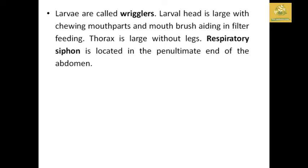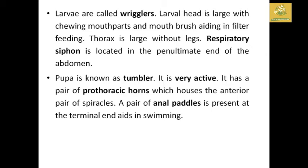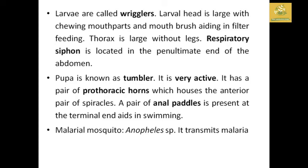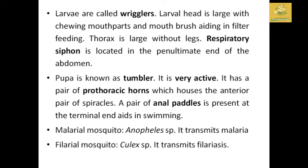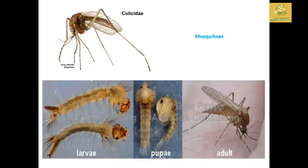The female mosquito lives long and is a blood feeder, also known as a household pest. The larvae are called wrigglers; the larval head is large with chewing mouthparts. The thorax is large without legs. A respiratory siphon is located at the penultimate end of the abdomen in Anopheles mosquitoes. The pupa is known as the tumbler pupa — it is very active even in the pupal state. It has prothoracic horns and a pair of anal paddles at the terminal end for swimming. Anopheles transmits malaria; Culex transmits filariasis.